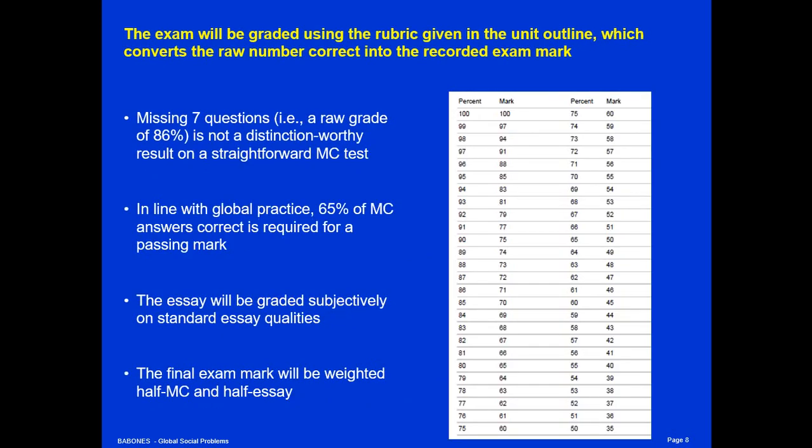The exam will be graded on the rubric given in the unit of study outline, which converts raw number correct into the recorded exam mark. I get a lot of complaints about the rubric — that's why it's right there in the unit of study outline, so that by registering for this class you've already agreed to it. What this rubric means is that if you miss seven questions on a 50-question test, that's an 86% score. At the University of Sydney, 86% is theoretically a high distinction — an amazing score. But I'm here to tell you that in the real world, getting 86% right on a multiple choice test is a B, a credit. It's all right, but it's not going to get you any amazing accolades.